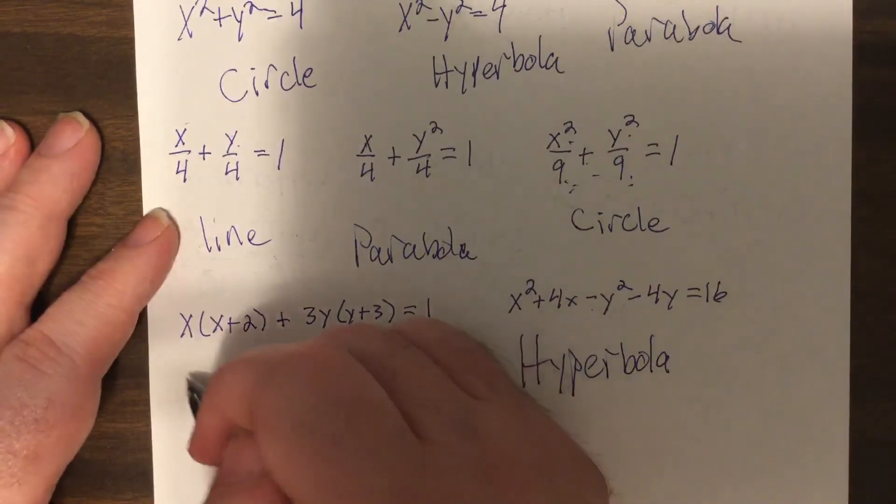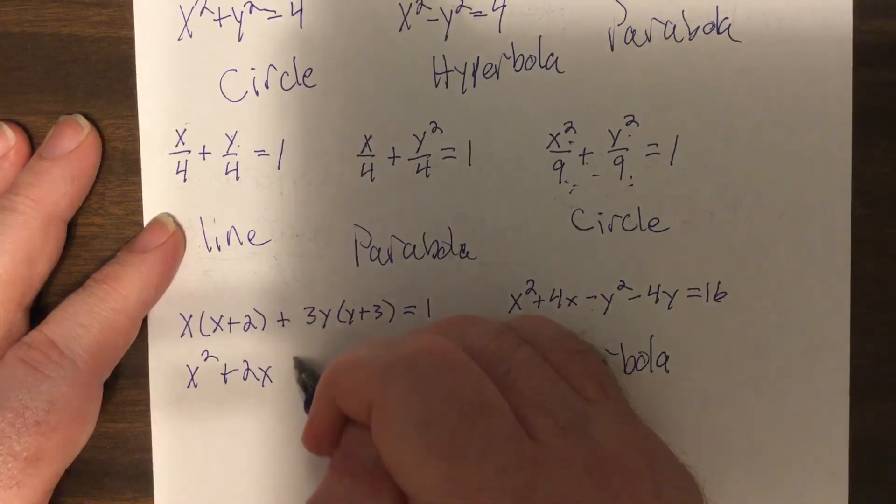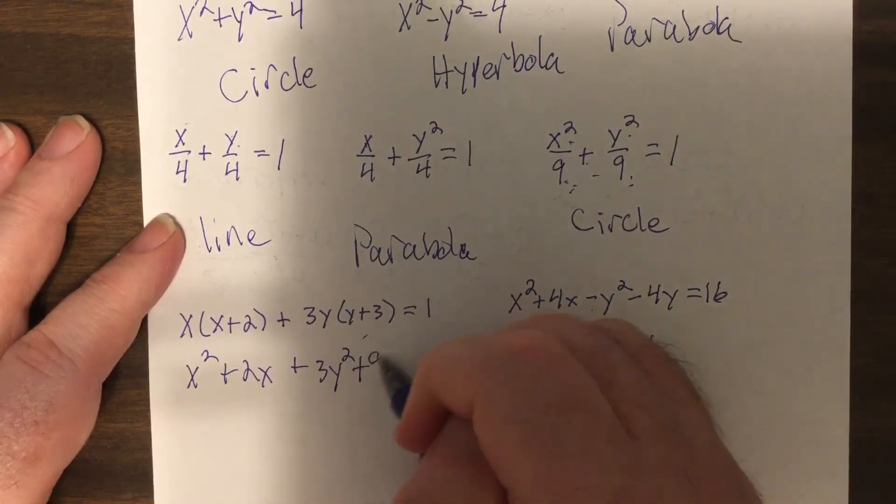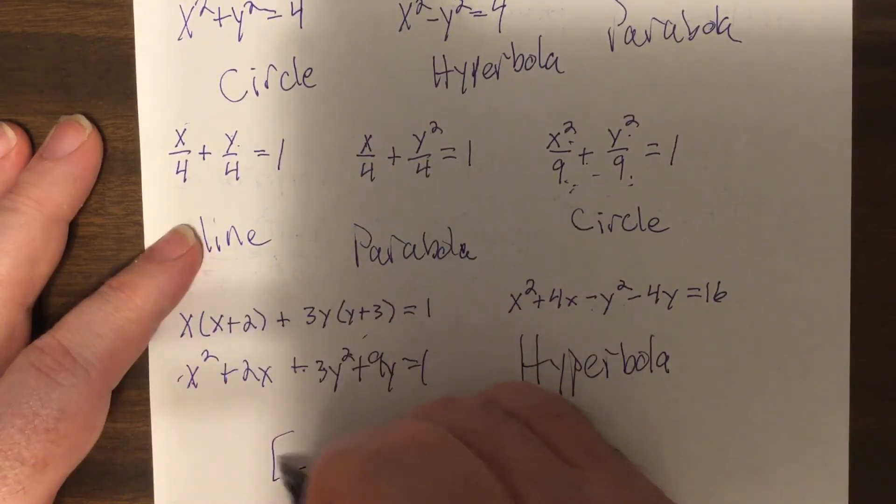And this one, oh, I tried to trick you. You distribute the x, distribute the 3y. Hey, sum of squares but different coefficients. It's an ellipse.